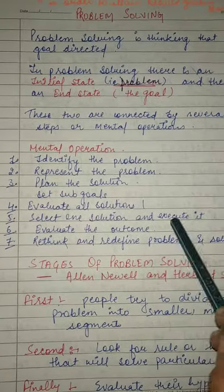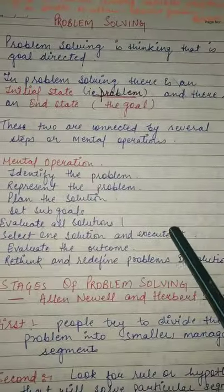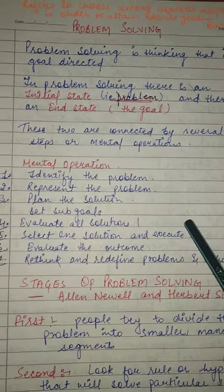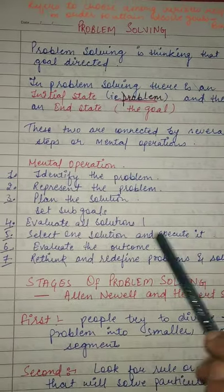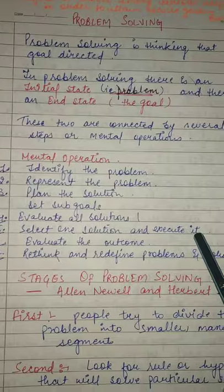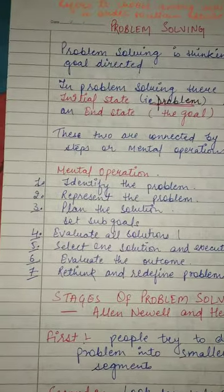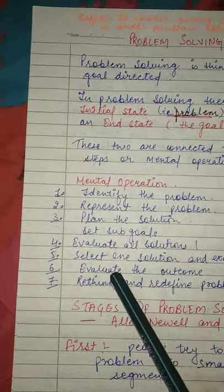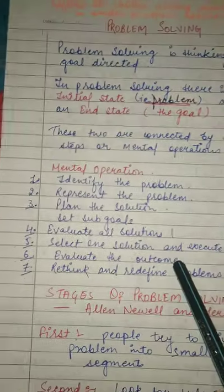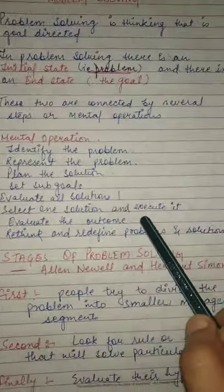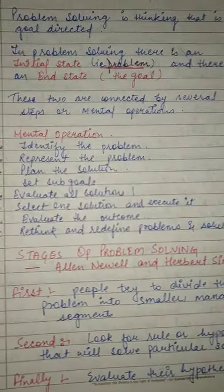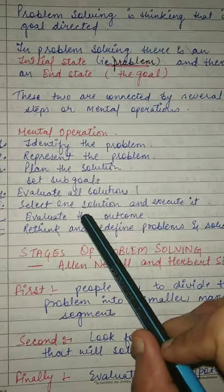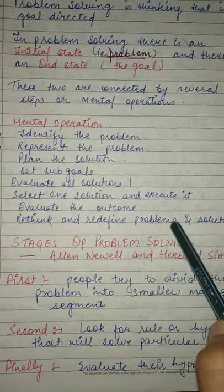Select one solution and execute it — compare करते हैं और जो best होता है उसको select करते हैं और execute करते हैं. Evaluate the outcome — कितना हमारा play अच्छा रहा, future में हम क्या अपने play का reference देते हैं.